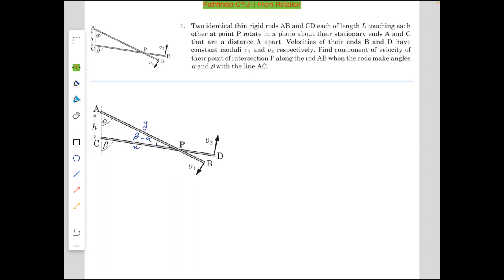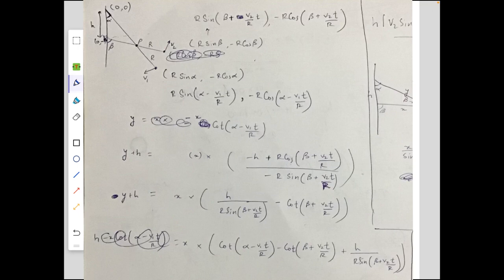When the rods make angle alpha and beta with the line AC. This is a very nice problem, one of my all-time favorites. I tried it quite a few months ago, so I don't remember the solution now. First of all, I tried bashing it using coordinate geometry and failed very miserably as you can see on the screen.